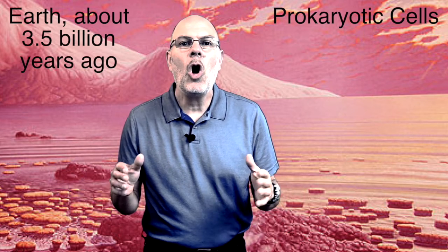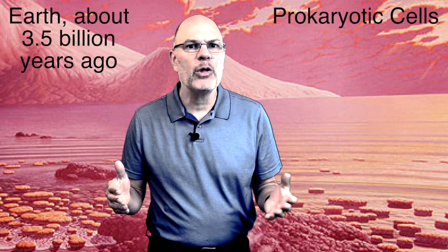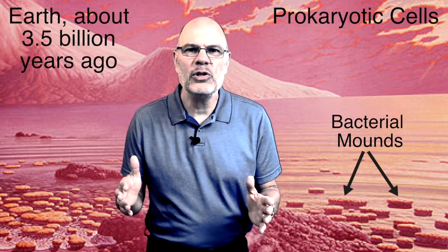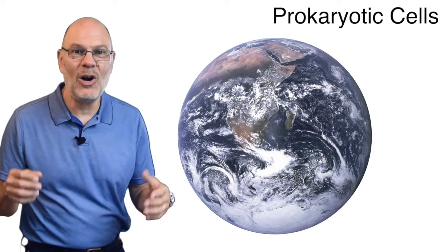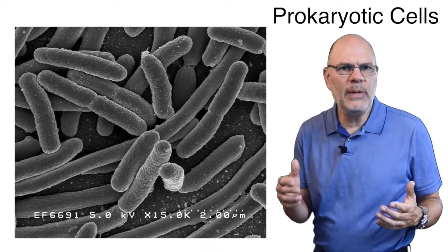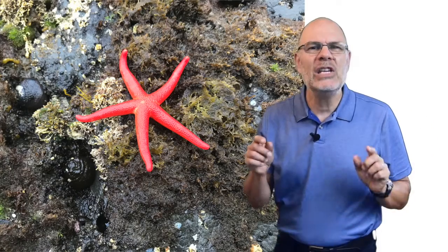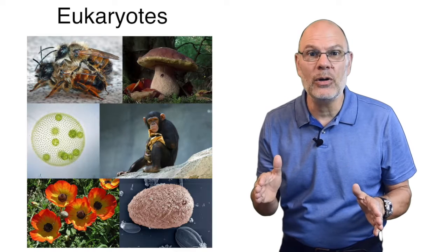For billions of years, all life was prokaryotic. Here's what the world might have looked like 3.5 or so billion years ago. These mats are mounds of bacteria. Prokaryotes are incredibly successful and abundant. Photosynthetic bacteria transformed our planet by creating our oxygen-rich atmosphere. But they've never evolved beyond being the tiny single cells that they are. Multicellular complexity is something that only happened in organisms like us, the eukaryotes.